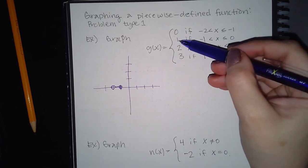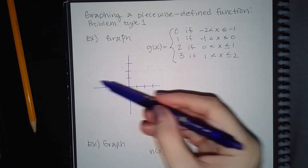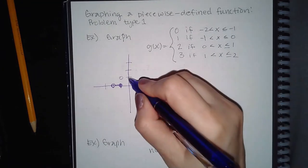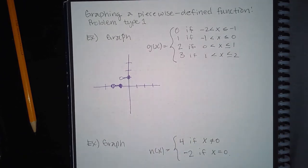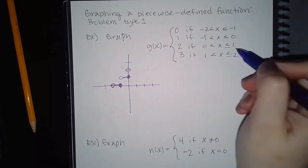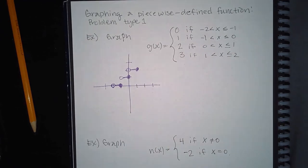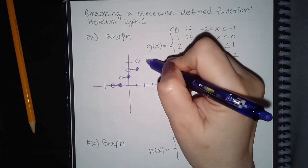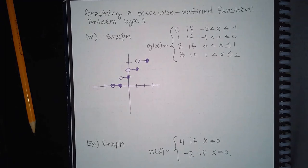For the graph of y equals 1, that's a horizontal line at y equals 1, but I only want it from negative 1 with an open dot to 0 with a closed dot, and I draw that horizontal line in there. For y equals 2, I want it from 0 with an open dot to 1 with a closed dot, and draw the horizontal line in between. And then for y equals 3, it will be open at 1 and closed at 2, with a horizontal graph in between.